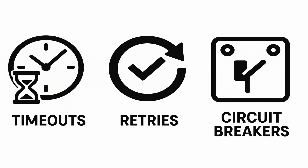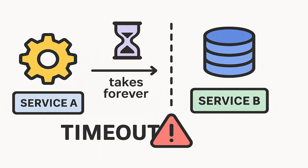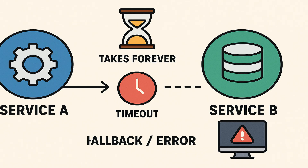Let's say service A calls service B but service B takes forever to respond — maybe due to load or some database-related issue. So instead of letting A hang forever, we configure a timeout. If no response comes in that time, service A just stops waiting and moves on, maybe showing a fallback or error to the user.